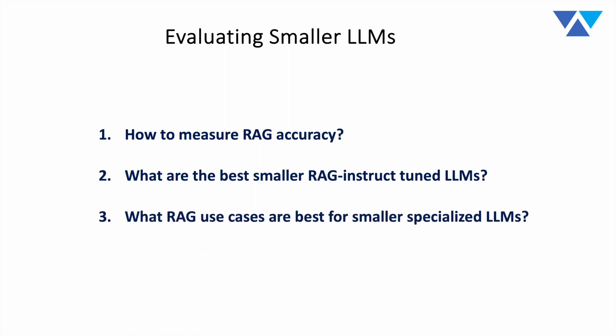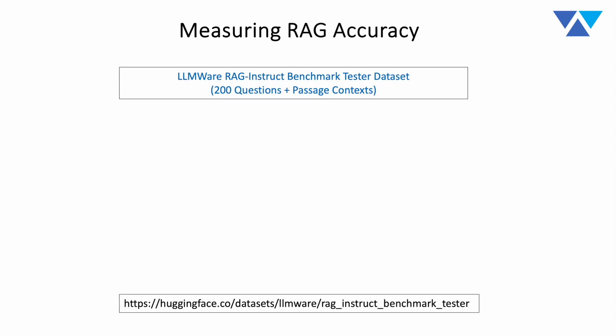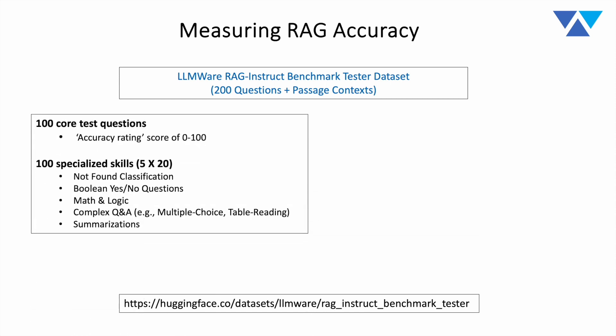We also asked: what types of use cases are fine for smaller models, and where do they create risk or exposure? These were the three questions we set out to answer. The first thing we did was create a benchmark test dataset, which we released on Hugging Face — you can find it at the link below. It's 200 questions including all passage contexts. The domain covers finance, legal, contracts, invoices, financial news, market research, technical content, and general news.